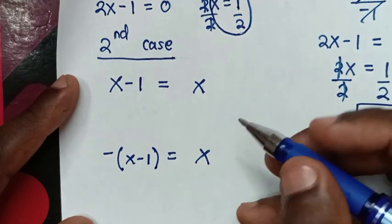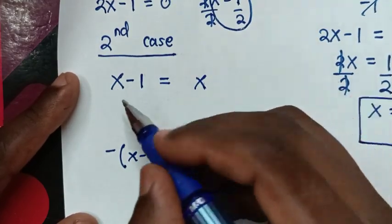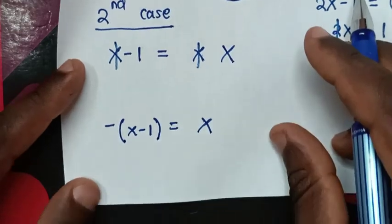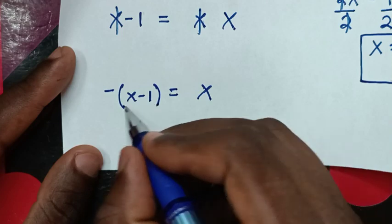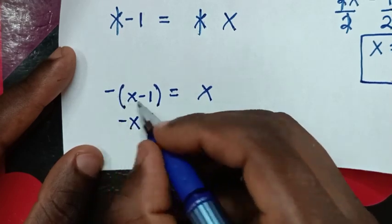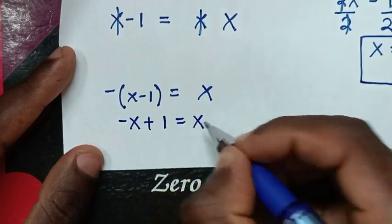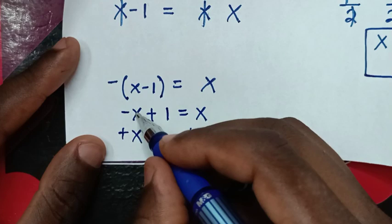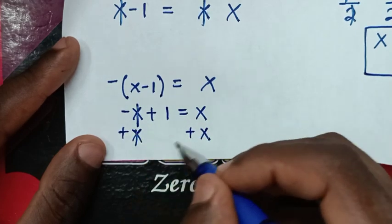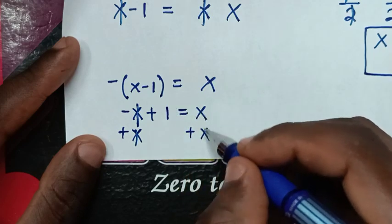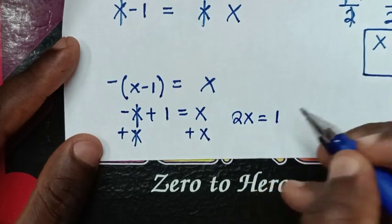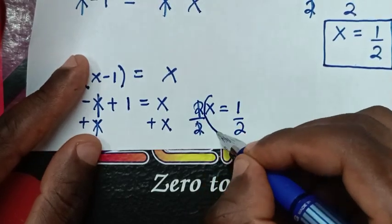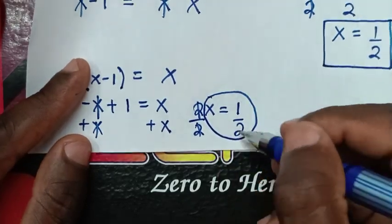In the second case, x minus 1 equals x: subtracting x from both sides leaves negative 1, so we can't find x and we reject this solution. For the other solution x equals negative (x minus 1): expanding gives negative x plus 1 equals x. Adding x to both sides, negative x plus x cancels, leaving 1 equals 2x. Dividing by 2 on both sides gives x equals one half from the second case as well.